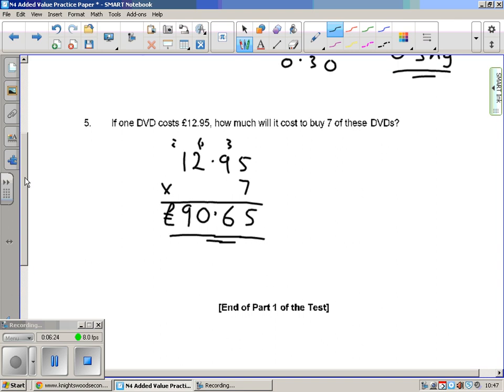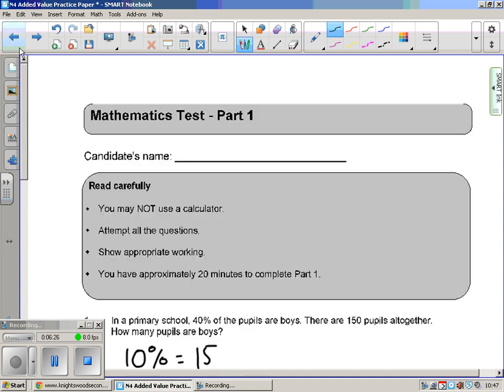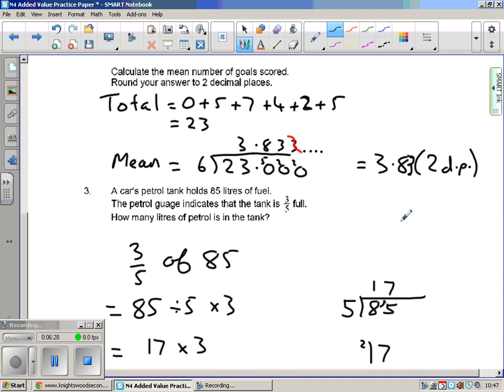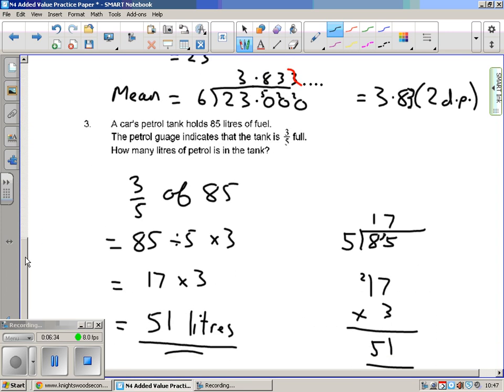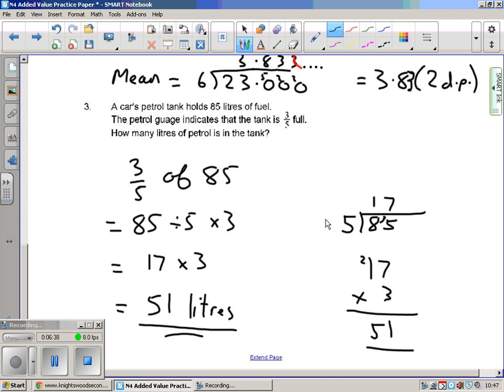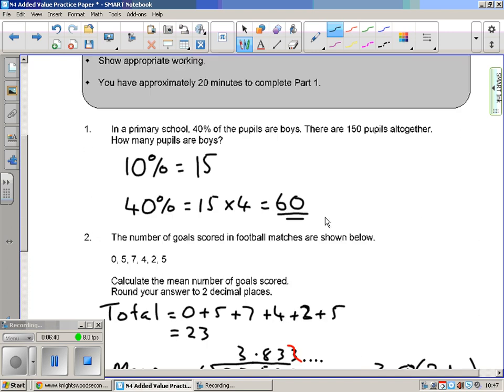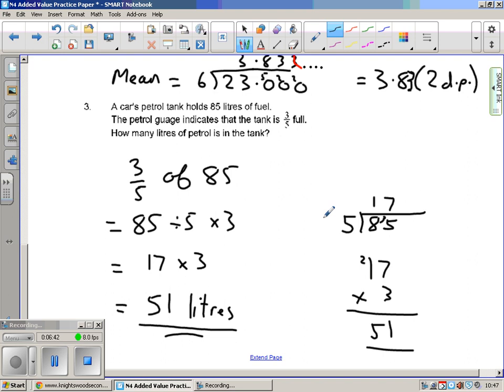Now once you've done all these go back through them and check them, which I clearly didn't because I'd missed out this bit here so I would have dropped a mark there, which would have been very sloppy. And that is the national four added value practice paper, paper one. If you can do those questions you'll be absolutely fine on paper one and the actual test.